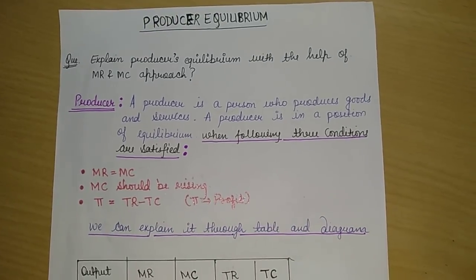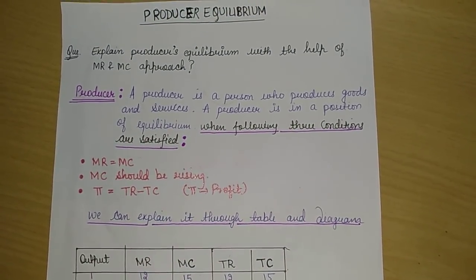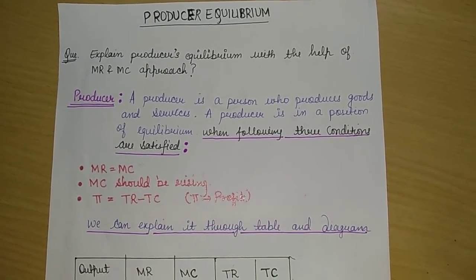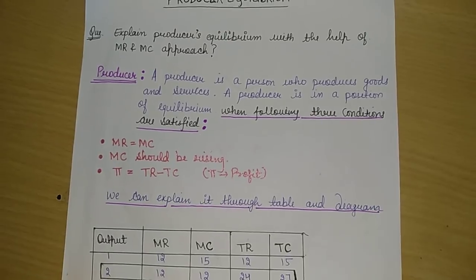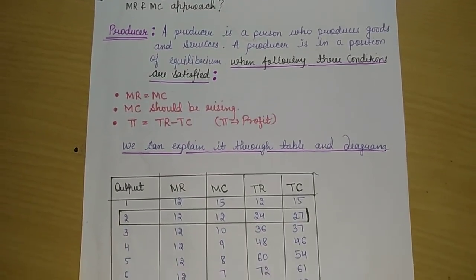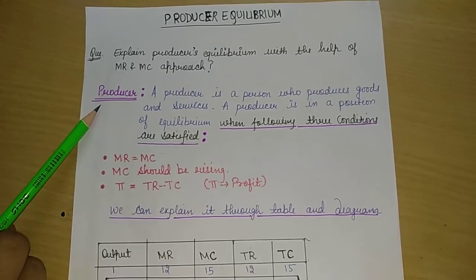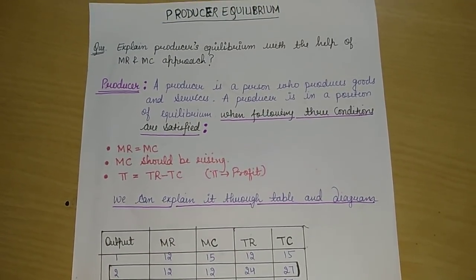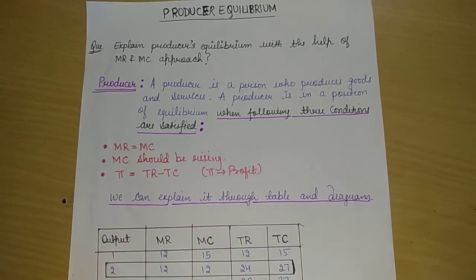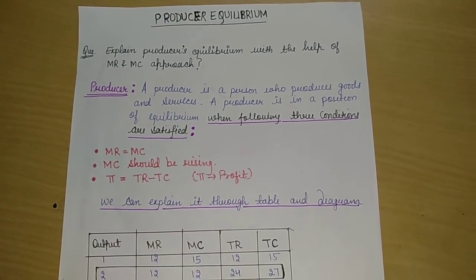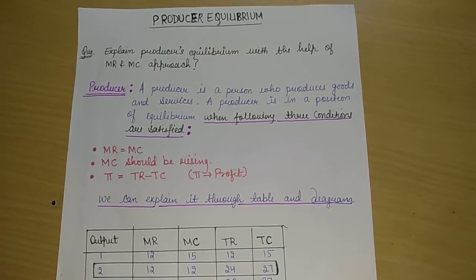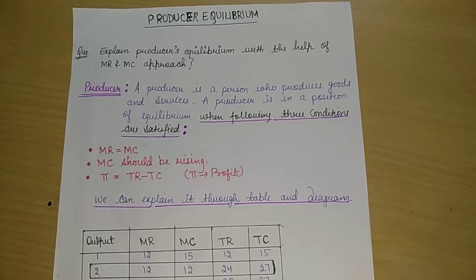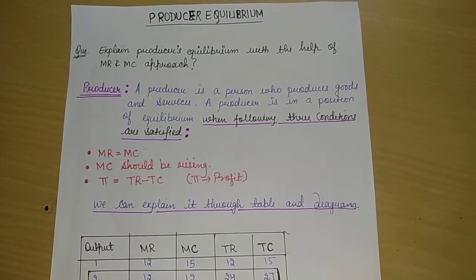The question comes to our Producer Equilibrium, which is called: Explain Producer Equilibrium with the help of MR and MC approach. First of all, we will define who is a Producer. A producer is a person who produces goods and services. A producer is in the position of Equilibrium when the following three conditions are satisfied.